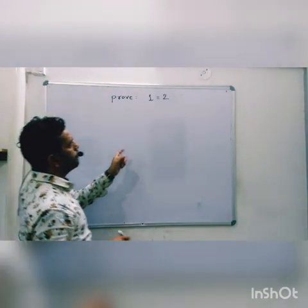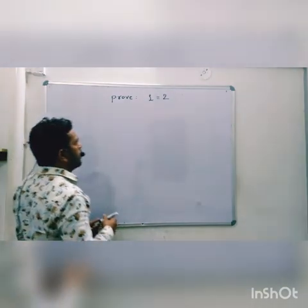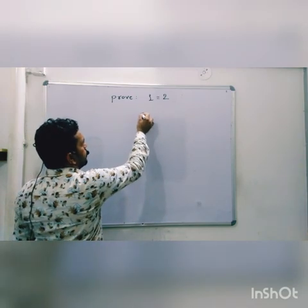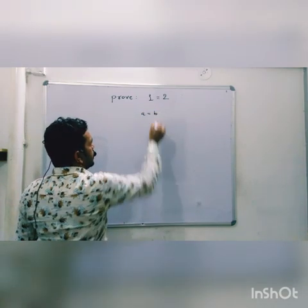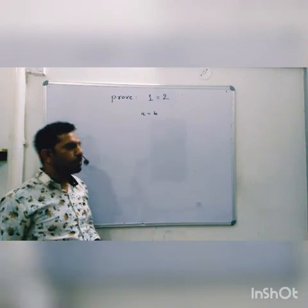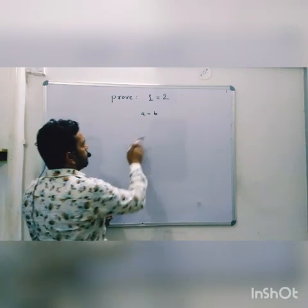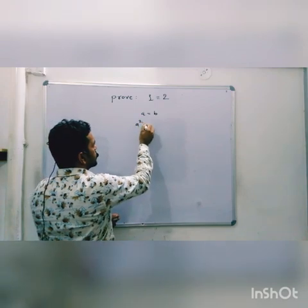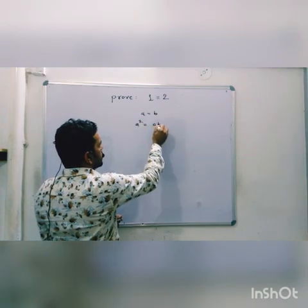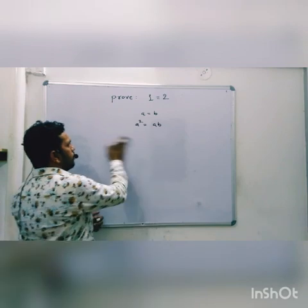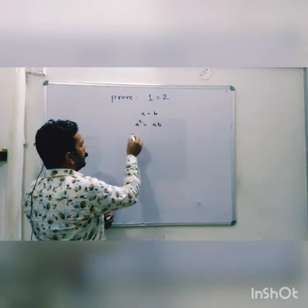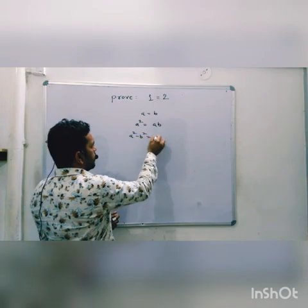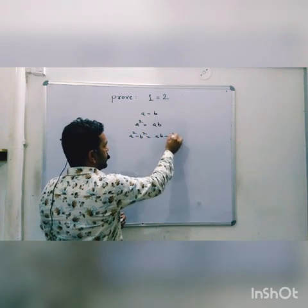We will prove 1 equals to 2. Let us take two numbers which are equal to each other. Say, a equals to b. We will multiply by a on both sides. So this will become a squared and this will become ab. Now, we are subtracting b squared from both sides. So, a squared minus b squared equals ab minus b squared.